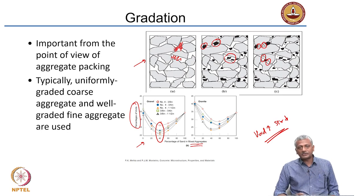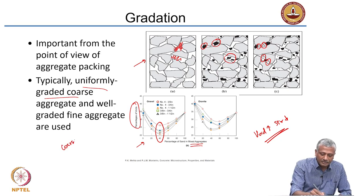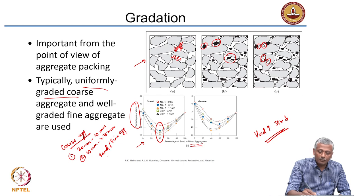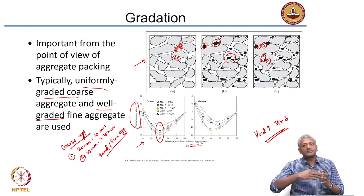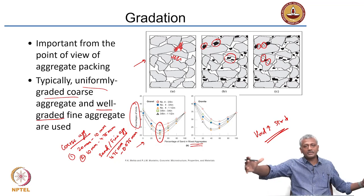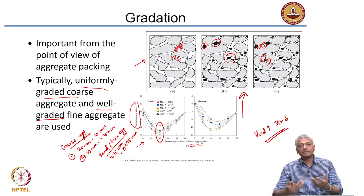This is quite easily demonstrated. Coarse aggregates typically used in concrete are first 20 mm to 10 mm, and the second size is typically 10 mm to 4.75 mm. Sand or fine aggregate, on the other hand, is well graded — it has particles in a large range, going all the way from 4.75 millimeters to 75 microns (0.075 mm). Particle sizes vary over a large range, allowing them to fill the voids left behind by the previous set of aggregates.